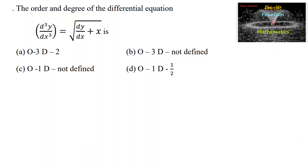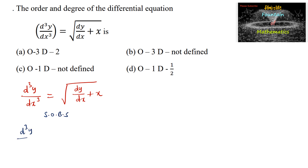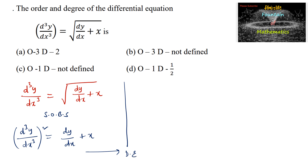Find the order and degree of the differential equation d³y/dx³ equals the square root of (dy/dx plus x). Squaring on both sides to remove the radical power, we get (d³y/dx³)² equals dy/dx plus x. Now the highest order derivative is d³y/dx³, so the order is 3, and its degree (the power of that highest order term) is 2. So the order is 3 and degree is 2, which is option A.